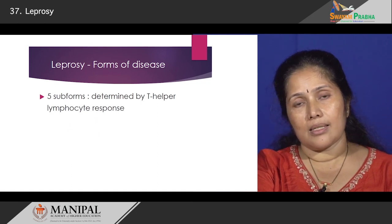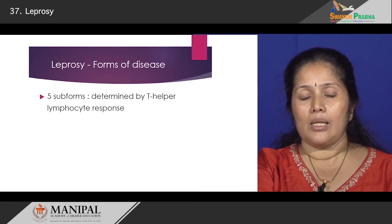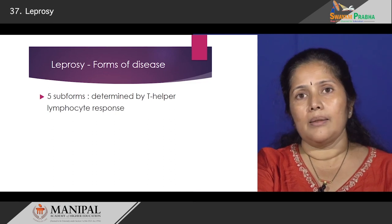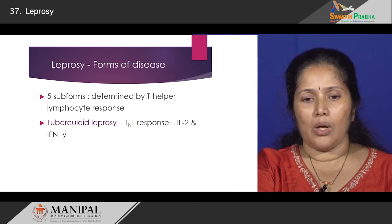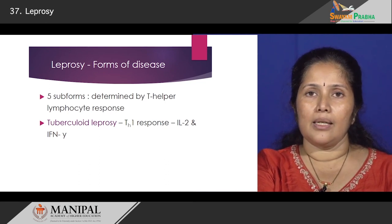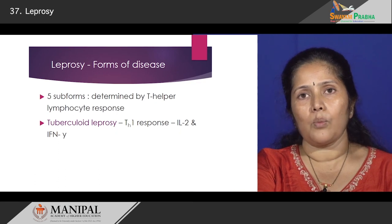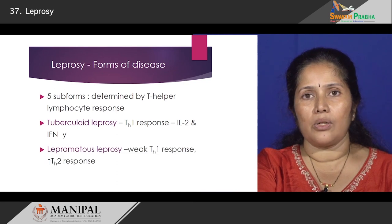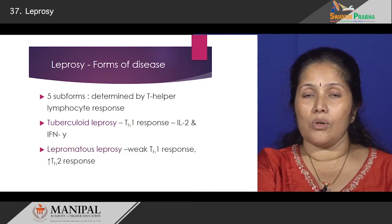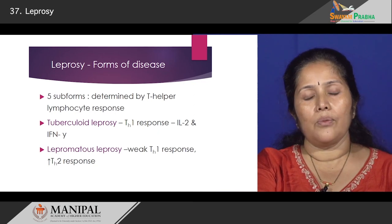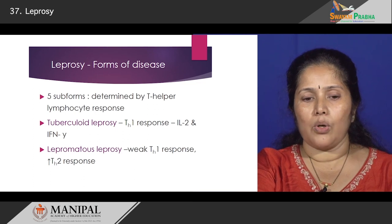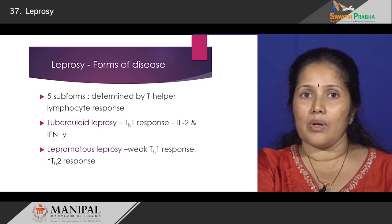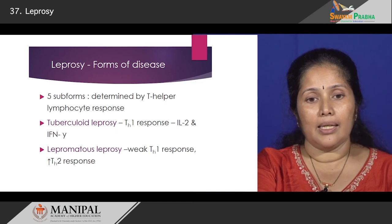What decides these subforms in leprosy? It is determined by the function of the T helper cells. In tuberculoid leprosy there is a high response from T helper 1 cells and they produce a lot of interleukins as well as interferon gamma. While it is almost the reverse in the lepromatous end, where there is a very weak T helper 1 cell response while the response from the T helper 2 cells is markedly increased.